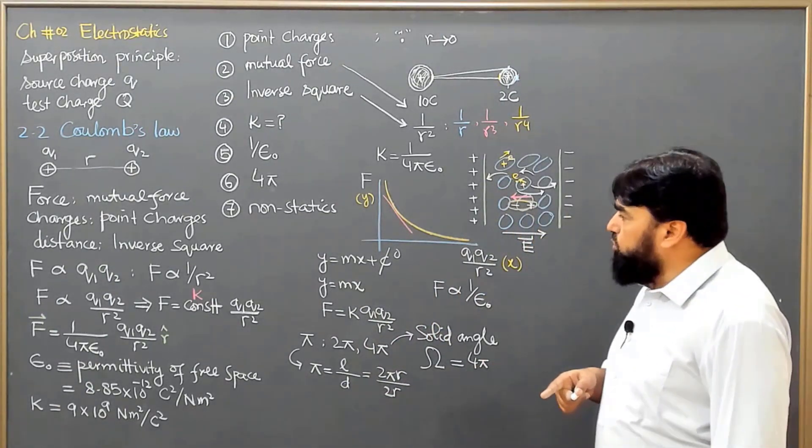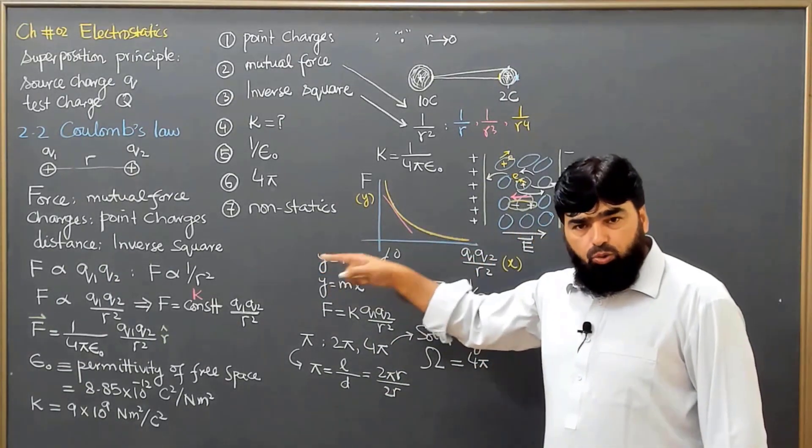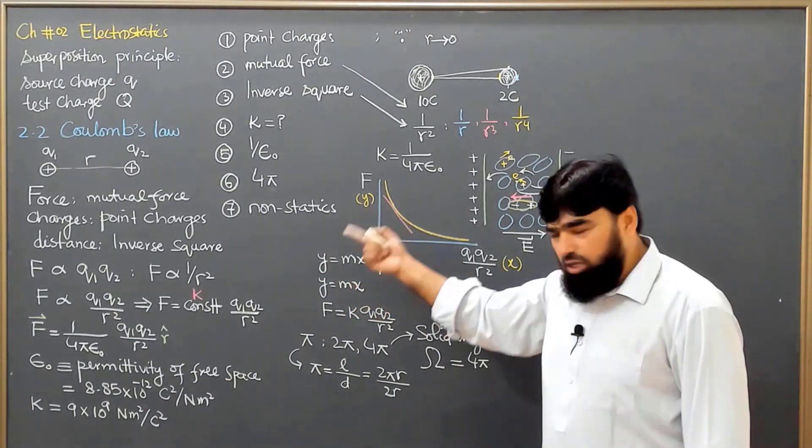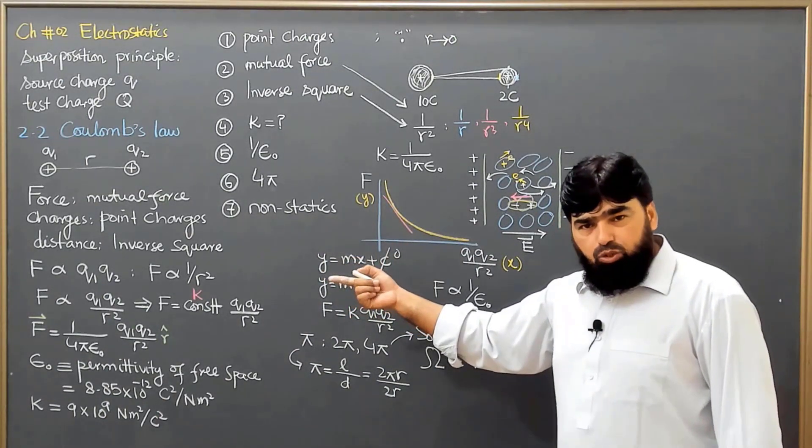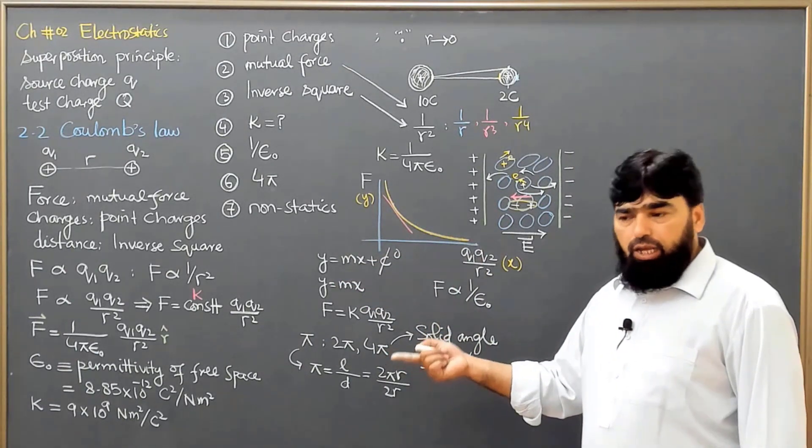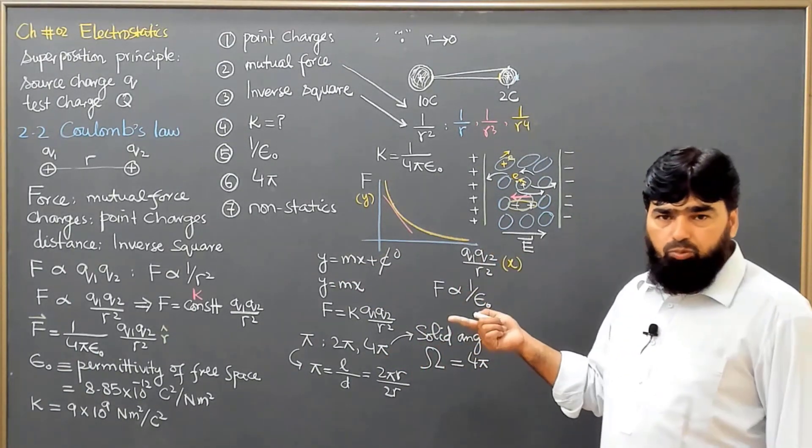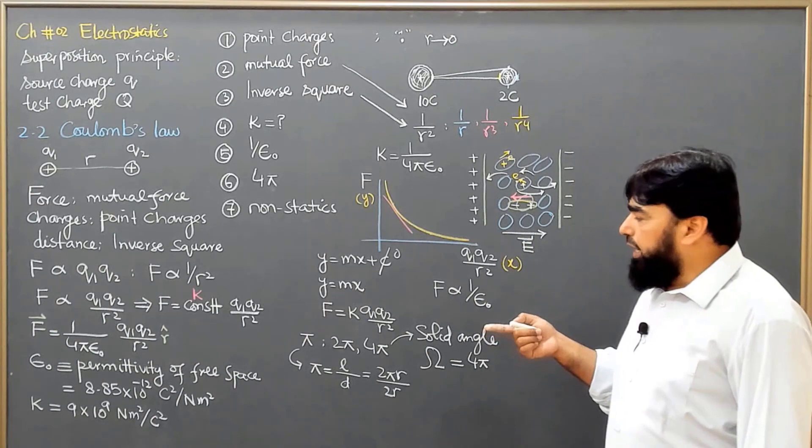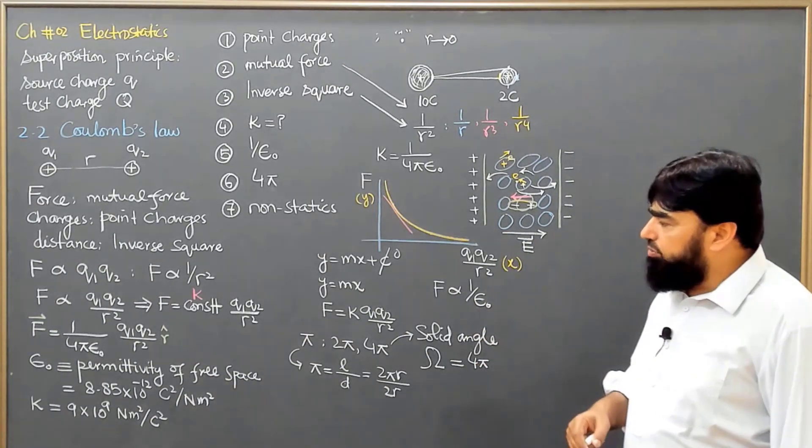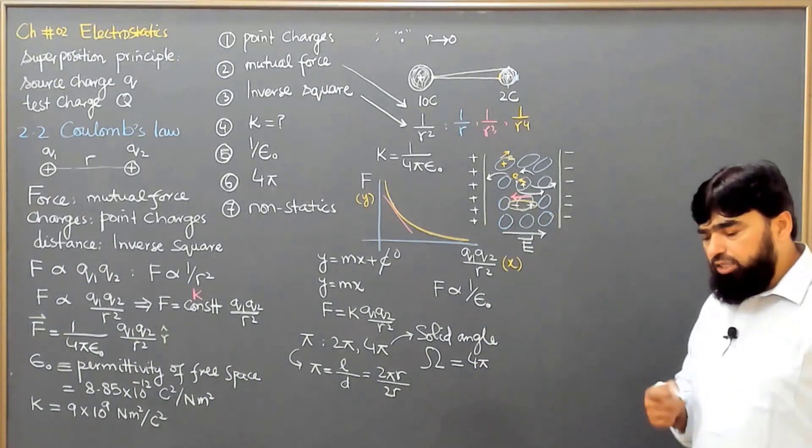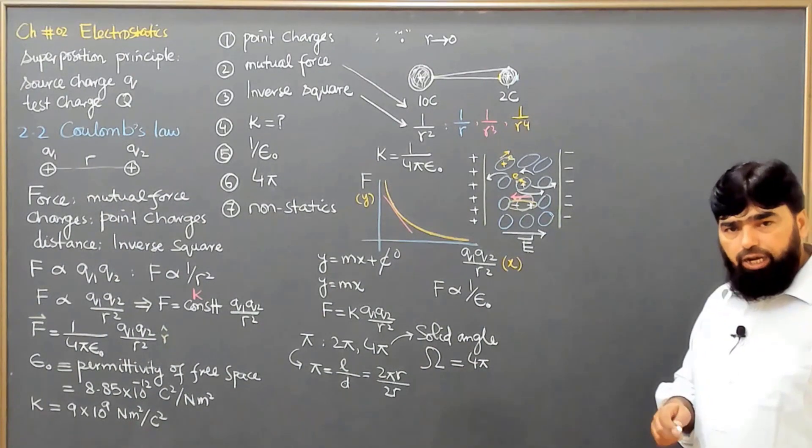Then we use the Coulombic potential. The Coulombic potential is based on the Coulombic force. So the Coulombic force and the centripetal force we compare and from that we derive the radius of the hydrogen atom.